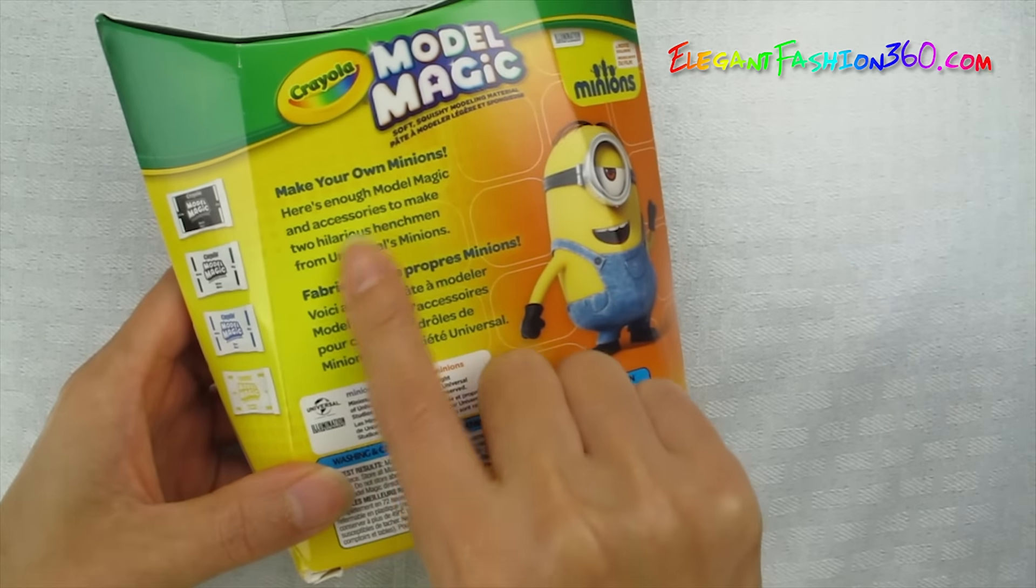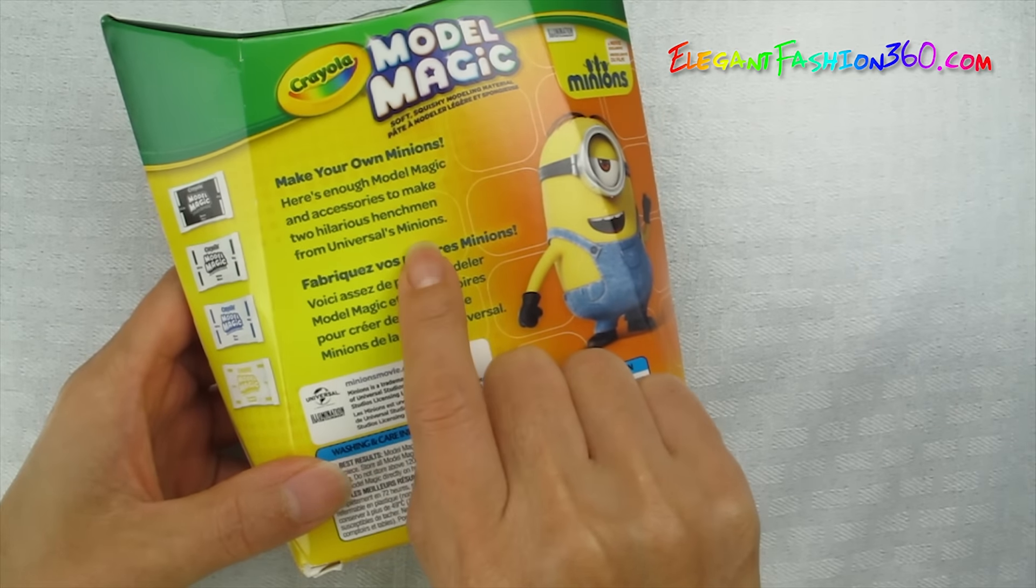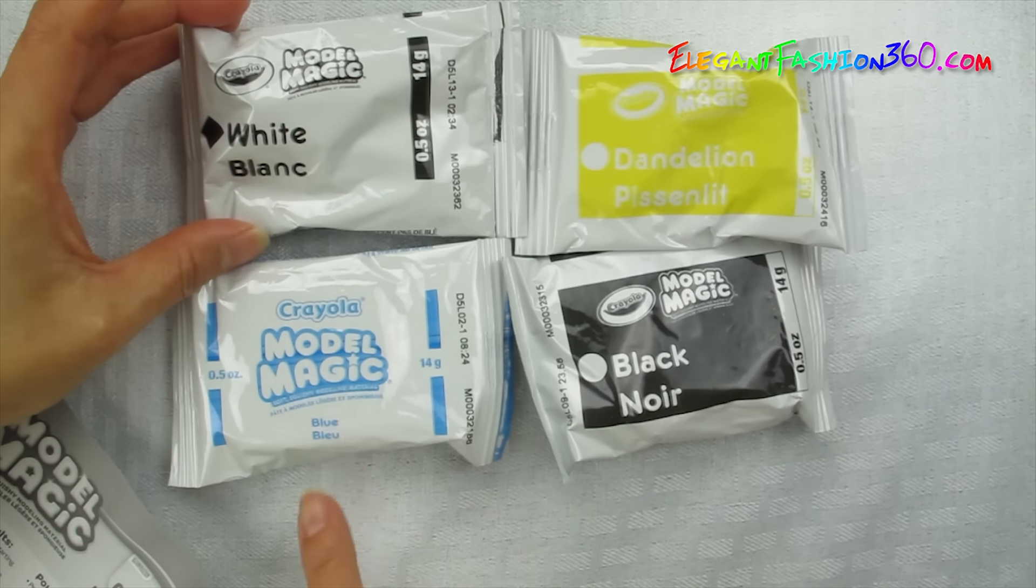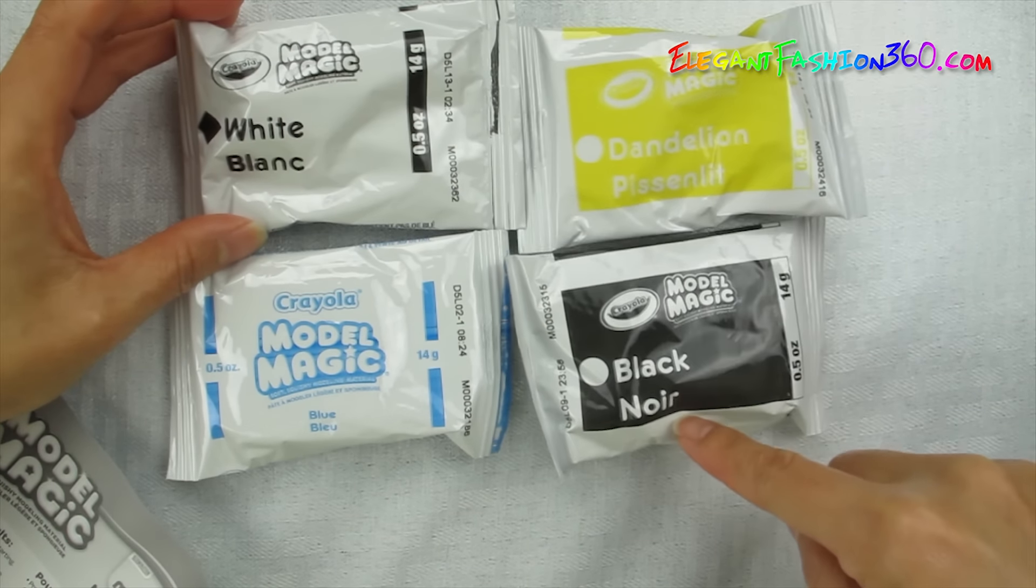On the box here, it says this is enough to make two Minions, supposed to have everything that we need here. The box comes with four packs: white, blue, yellow, and black.